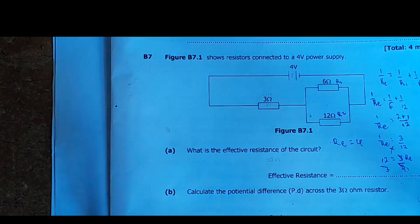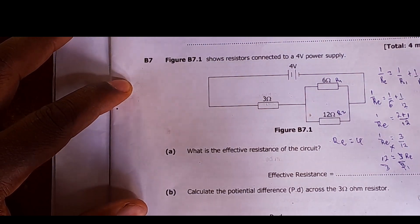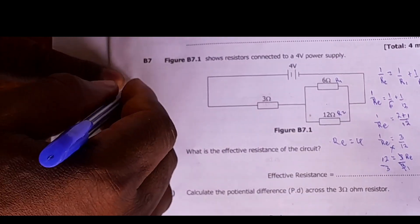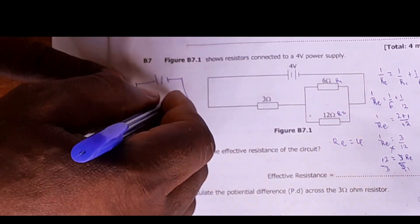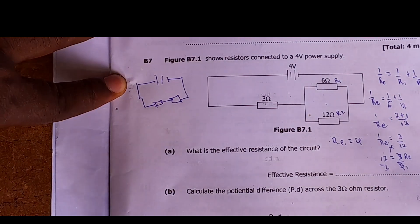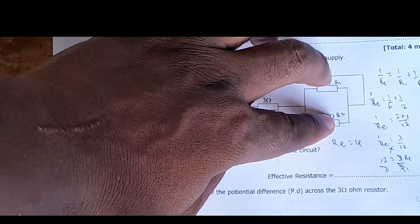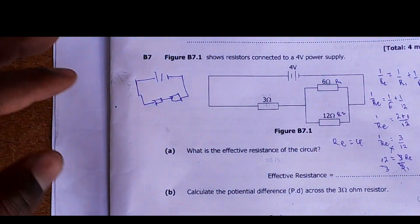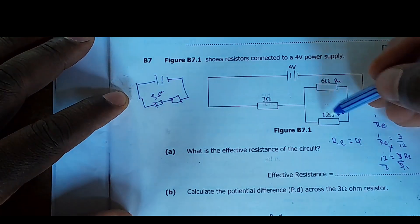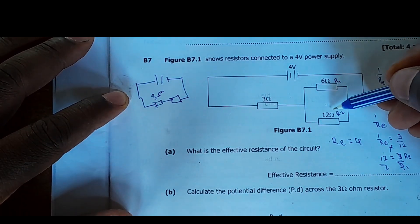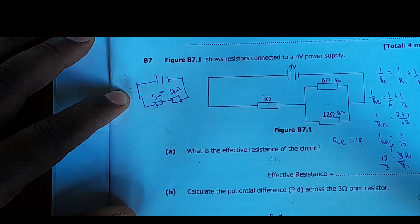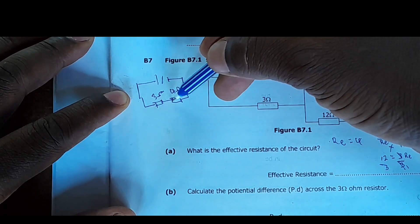We can now redraw what we have. The two parallel resistors have been resolved into one equivalent resistor. So the redrawn circuit has this equivalent resistor of 4 ohms, and then the 3-ohm resistor. Looking at this arrangement, it is a series arrangement — we have 3 ohms and 4 ohms in series.